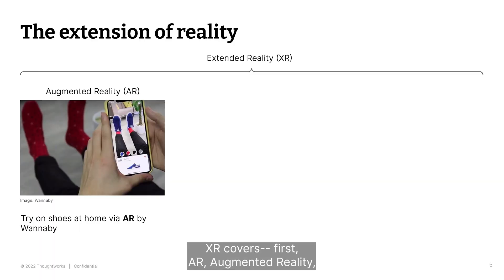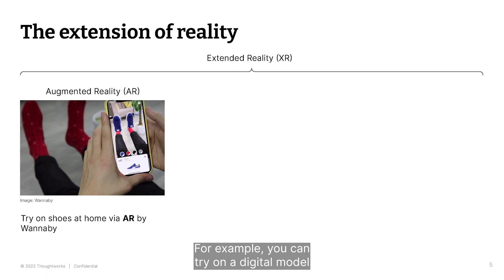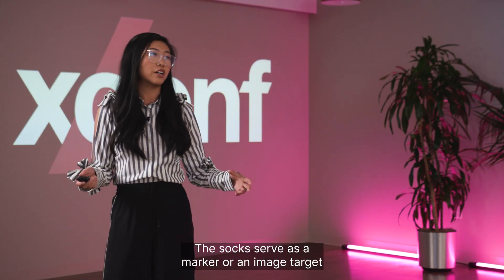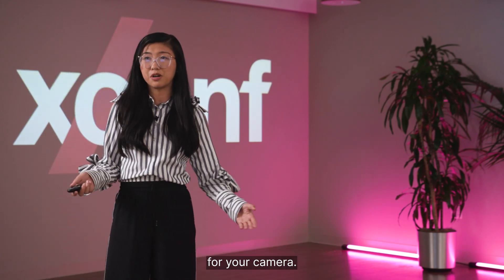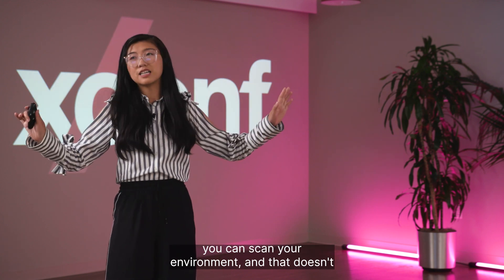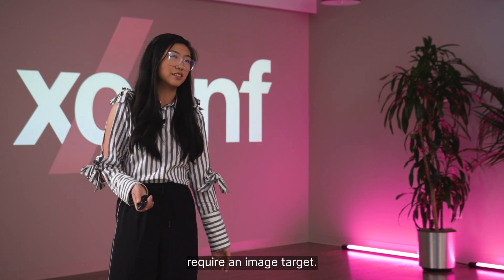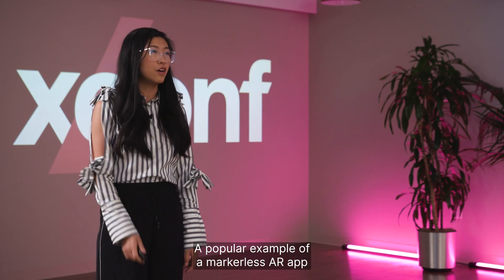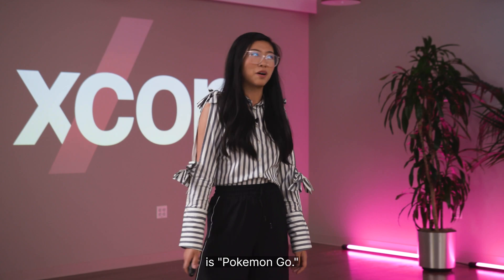XR covers, first, AR — augmented reality — where you can overlay a digital object over the real world. For example, you can try on a digital model shoe over your IRL socks. The socks serve as a marker or image target for your camera. You can have markerless AR as well, where you can scan your environment and that doesn't require an image target. A popular example of a markerless AR app is Pokemon Go.